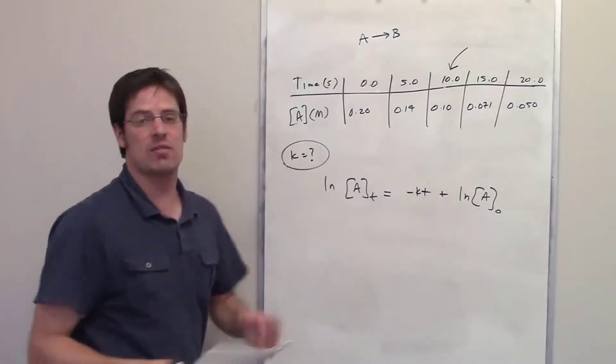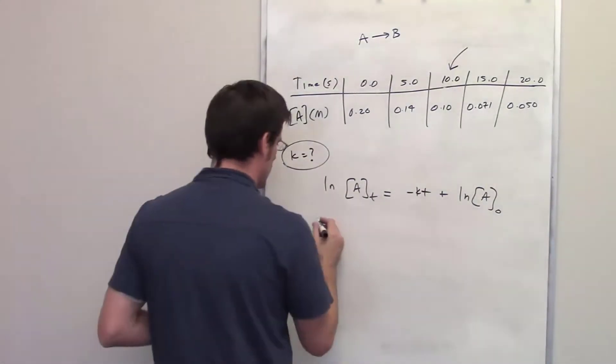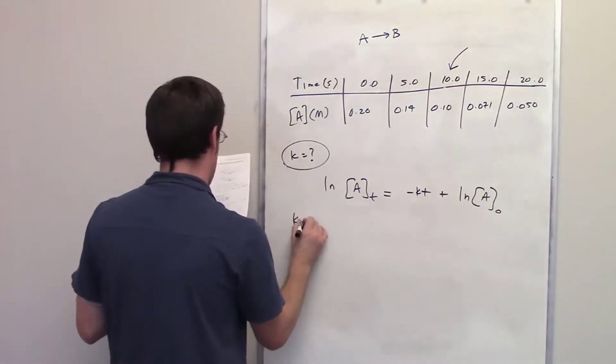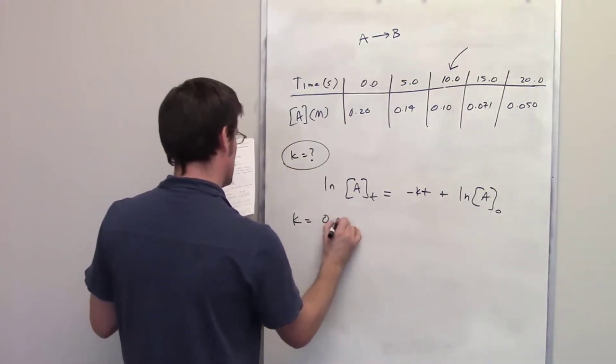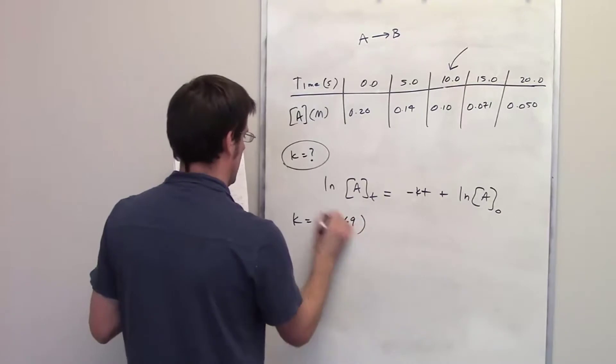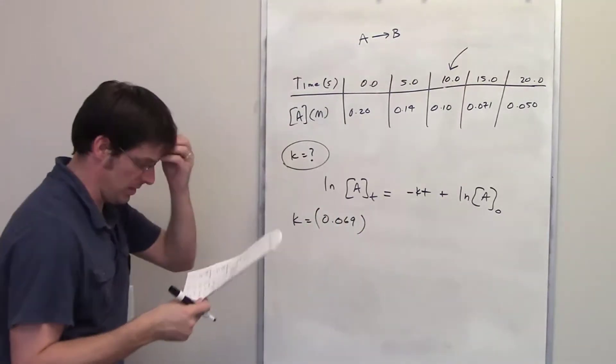We're dealing with the same data that we had from a previous question, in which we should have determined that k was equal to 0.069. And the units on that I honestly don't remember. But anyway,